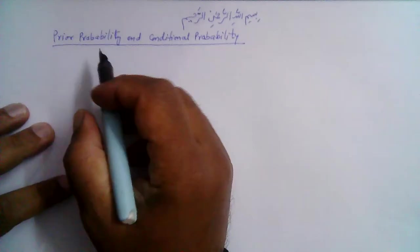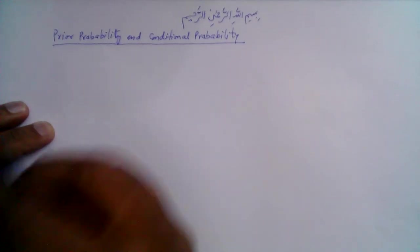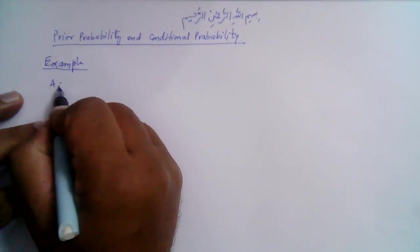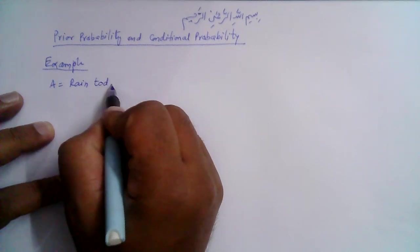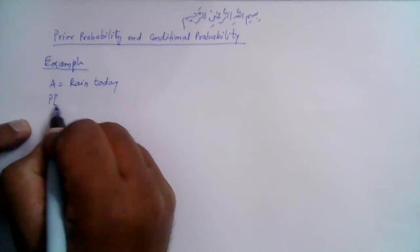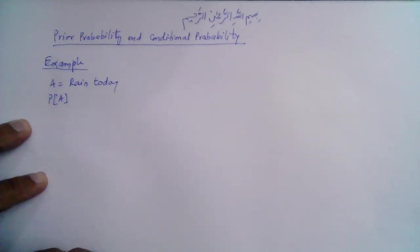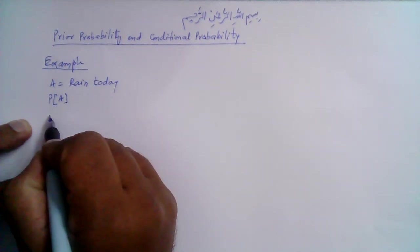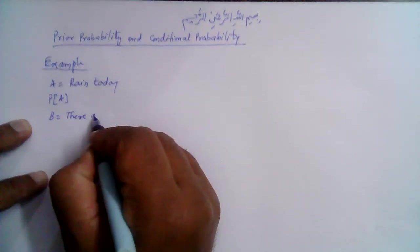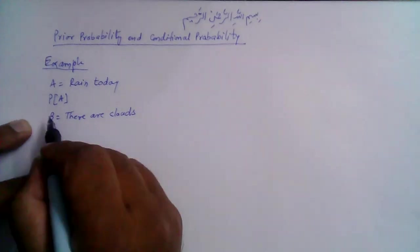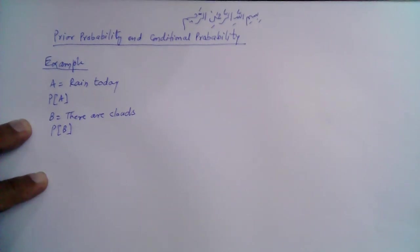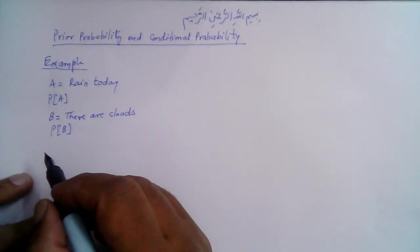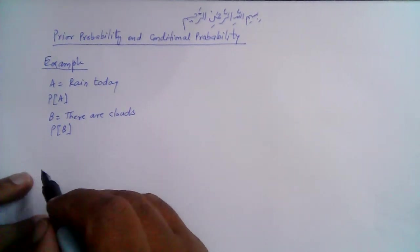We are going to discuss prior probability and conditional probability. Let's consider an example: event A is that there is rain today, so we express this as probability of event A. There may be many related events — for example, event B is that there are clouds, with probability B. We can calculate the probabilities of both these events using different methods and available data.